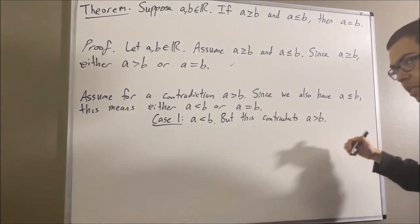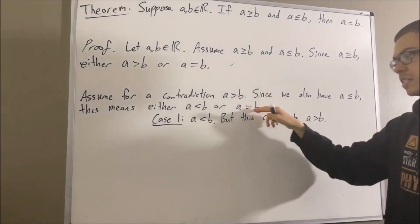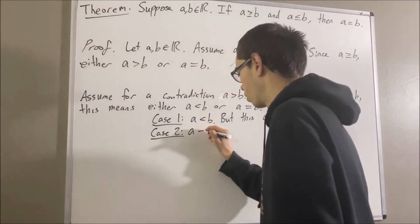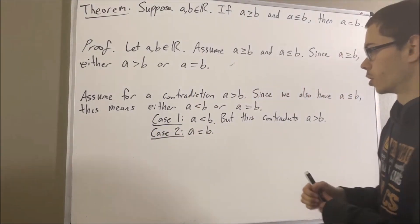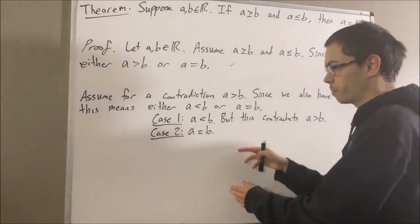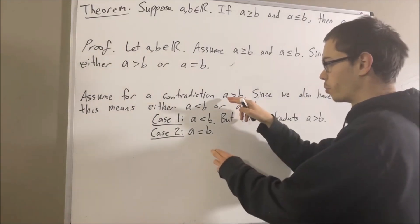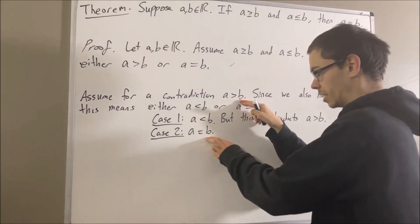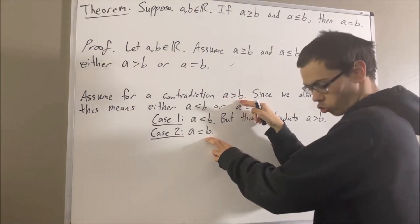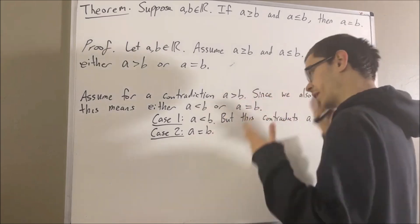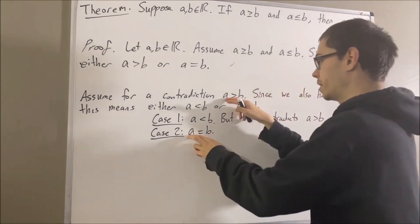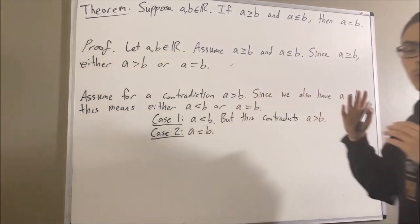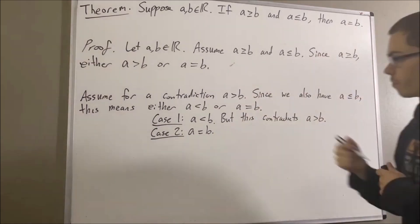Now let's move on to the other case where A is equal to B. In this case, we know that both A is greater than B and A is equal to B are true. But again, we know that these two things cannot be true at the same time, so we immediately reach a contradiction.